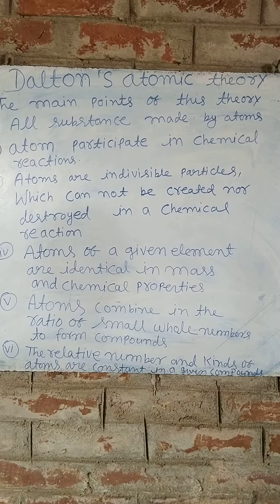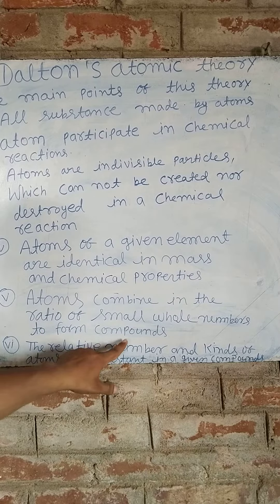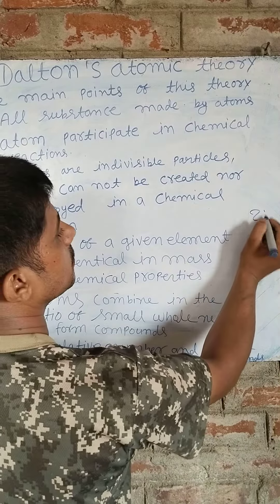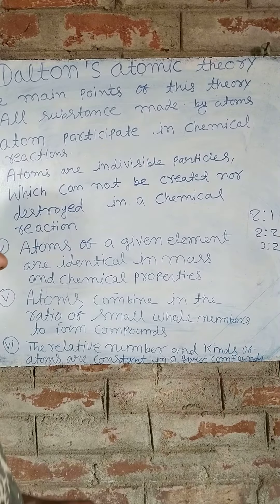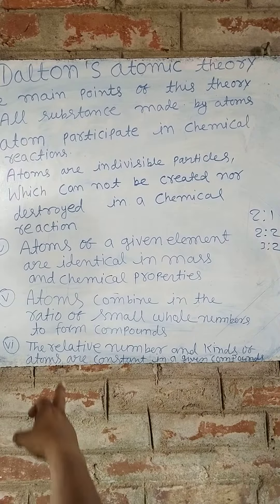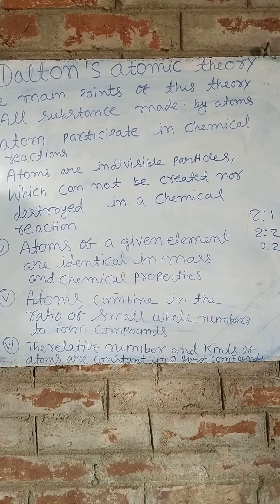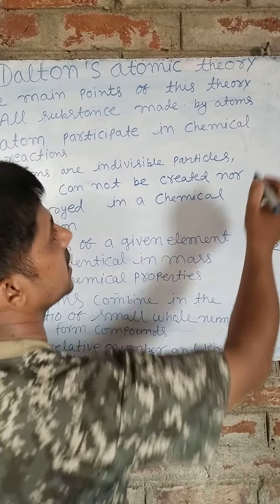Atoms combine in the ratio of small whole numbers to form compounds. In a given compound, atoms are always present in a fixed small whole number ratio.